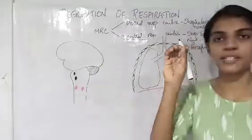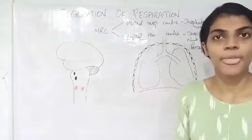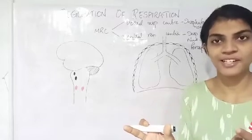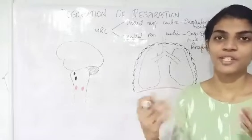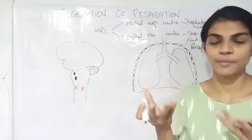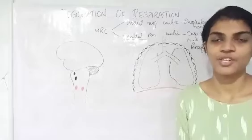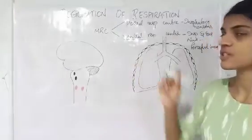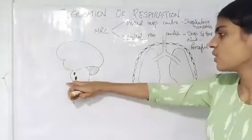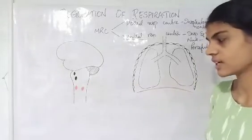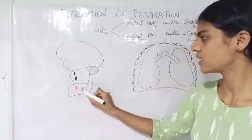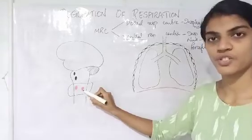So the dorsal respiratory center produces normal inspiration, and while expiration also occurs, it needs no impulse formation. For normal breathing, the dorsal respiratory center is the one taking part. The ventral respiratory center produces forceful breath. We have now discussed both medullary centers: the dorsal respiratory group and ventral respiratory group of neurons.